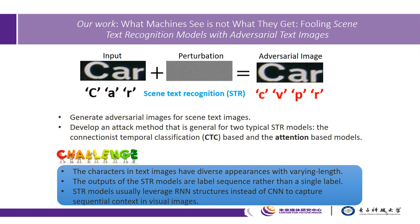To this end, we focus on generating adversarial images for scene text images, and we want to develop an attack method that is general for two typical STR models: the CTC-based and the attention-based. The challenge is that the characters in the text image have diverse appearance with varying lengths. The output of the STR models are label sequences rather than a single label. Finally, the STR models usually leverage RNN structure instead of CNN to capture sequential context in visual images.